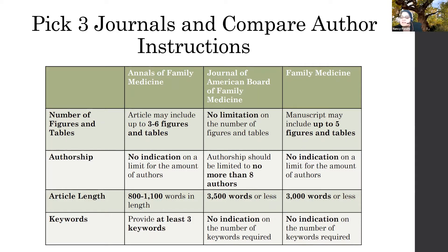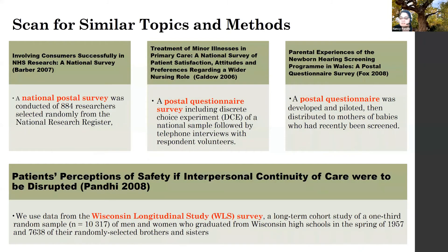Looking at a couple of family medicine journals, there is a range: Annals of Family Medicine allows three to six figures; Family Medicine allows up to five. If I'm formatting for a family medicine audience, I'd make sure I had only five figures to have a chance at all three. Authorship limits also matter — JBFM limits to no more than eight authors. Knowing that from the outset means you won't have to awkwardly drop someone from your team when you reformat for that journal.